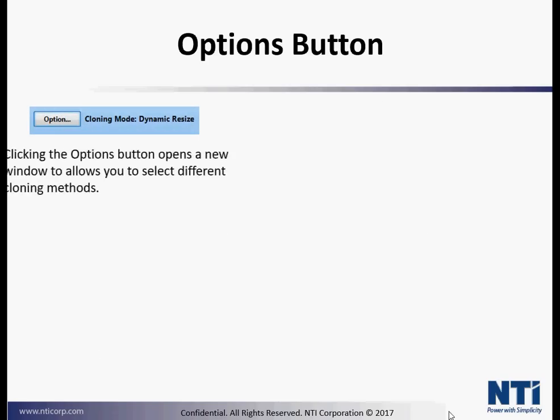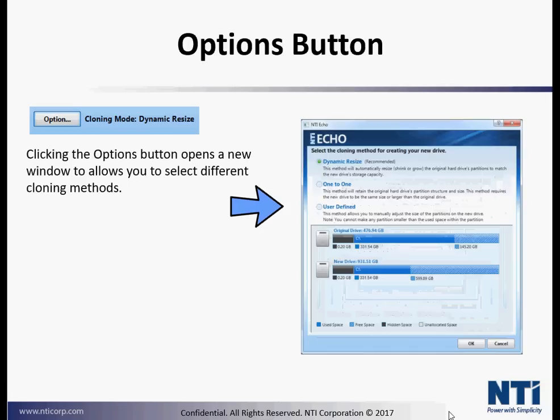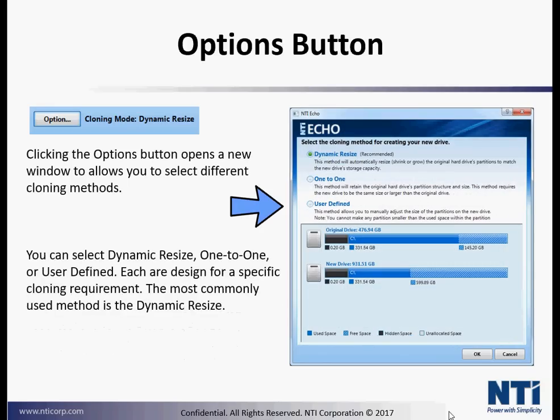Options button. Clicking on the option button opens a new window to allow you to select different cloning methods. You can select dynamic resize, one-to-one, or user-defined. Each are designed for a specific cloning requirement.